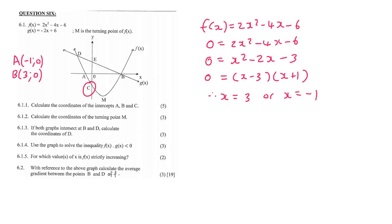To find C you make x equal to 0. So we say y equals 2, and then you make x equal to 0, which gives us negative 6. The coordinates of C will be 0 for x and minus 6 for y.